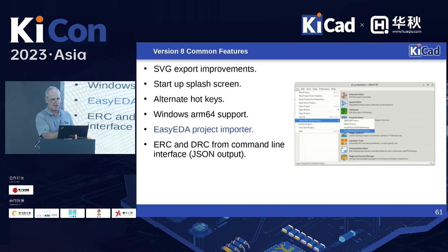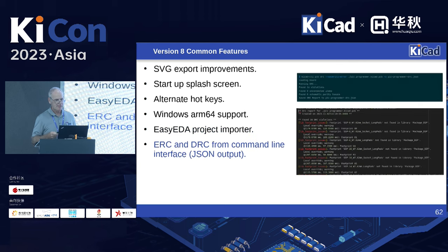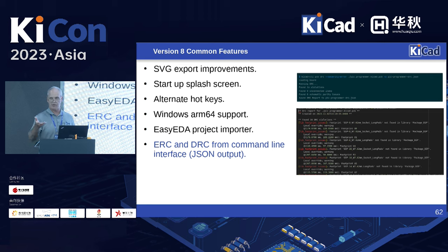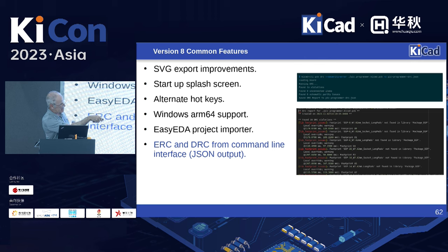If you have any EasyEDA projects, there's now a project importer that will import the entire EasyEDA project into KiCad. You can now run the ERC and DRC from the command line, so you can automate design checks — submit a new change to a board or schematic, run the test, and look for errors. The output is a plain text JSON format showing the violations found.